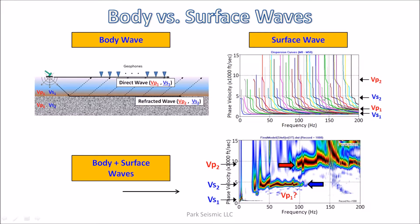We can identify horizontal trends created due to dispersion curves getting close to each other. One occurs at S wave velocity of soil (VS1), another at P wave velocity of soil (VP1), another at S wave velocity of bedrock (VS2), and a relatively weak trend at P wave velocity of bedrock (VP2).